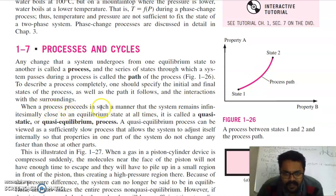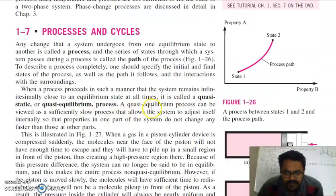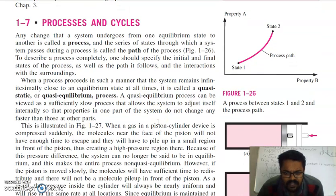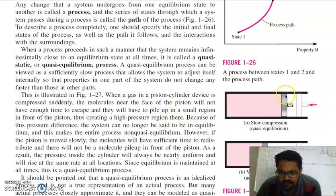When a process proceeds in such a manner that the system remains infinitely close to an equilibrium state at all times, it is called a quasi-static or quasi-equilibrium process. A quasi-equilibrium process can be viewed as a sufficiently slow process that allows the system to adjust itself internally. When a gas in a piston-cylinder device is compressed suddenly, the molecules near the face of the piston will not have enough time to escape. And when the piston will move very fast, it is called a non-quasi-static process.